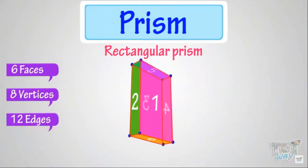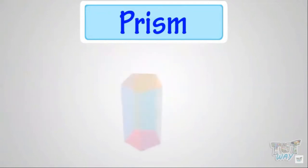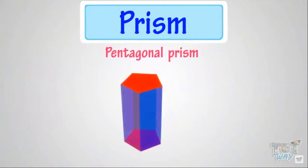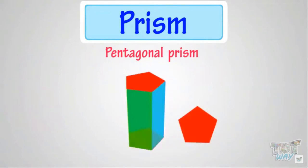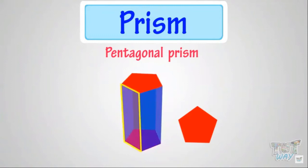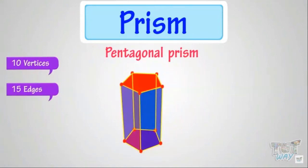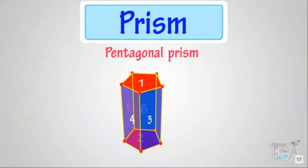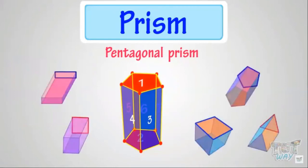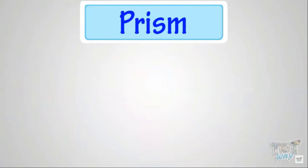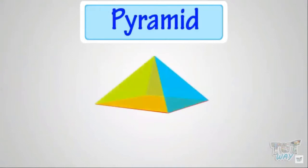Now let's learn another type of prism. This is a pentagonal prism because its top and bottom faces are pentagonal in shape and all other faces are rectangular. It has ten vertices, fifteen edges, and seven faces. There can be more types too, depending on the shape of its top and bottom faces. Now we will learn another 3D shape: pyramid, and its types.